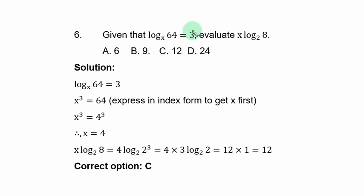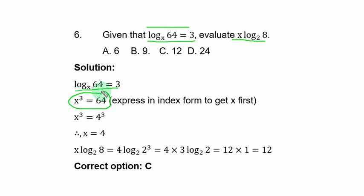Question 6: given that log₍ₛ₎ 64 = 3, evaluate s · log₂ 8. Convert the logarithmic form to index form: s³ = 64. Express 64 as 4³, so equating powers gives s = 4. Substituting into the expression: 4 · log₂ 8.